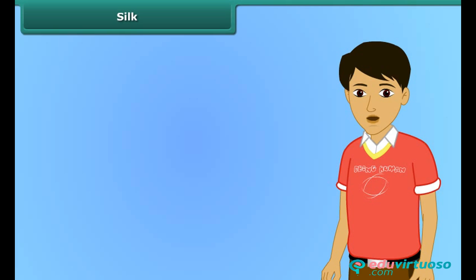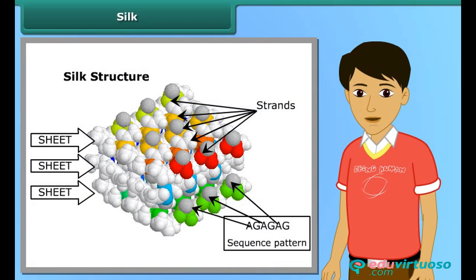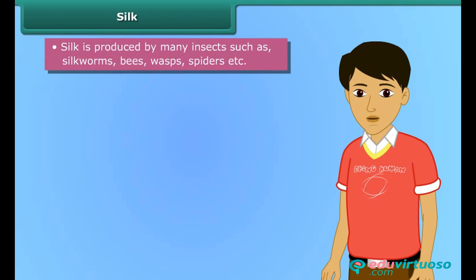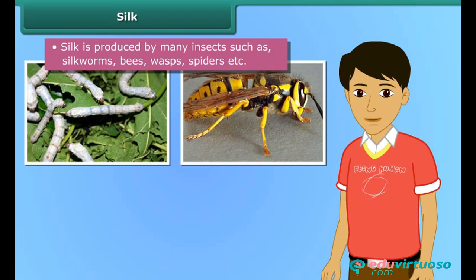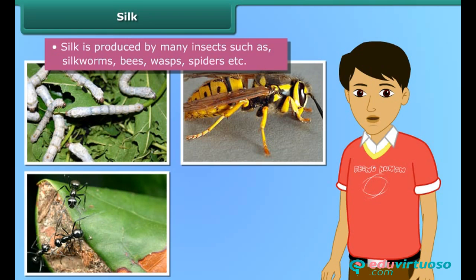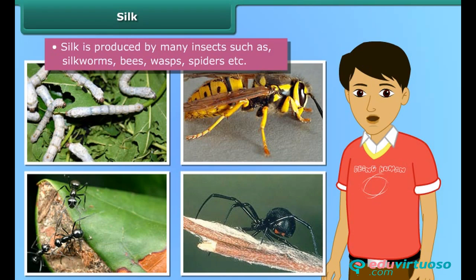The shimmer of silk fiber is the result of its triangular prism-like structure. Silk is produced by many insects such as silkworms, bees, wasps, and ants, which use it for building their nests. Spiders also produce silk, but only the silk produced by silkworms is processed into silk fabric.